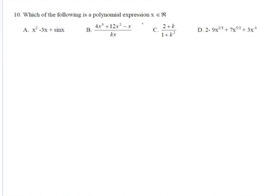Question 10: which of the following is a polynomial expression? A cannot be the answer because it is a combination of quadratic and trigonometry. B cannot be the answer because the domain of the expression in B is all real numbers except zero. Option C has fractional powers: 2 over 3, 5 over 2, and even minus 1 — these are not non-negative integers, so it is not a polynomial. Option D is a polynomial in x.